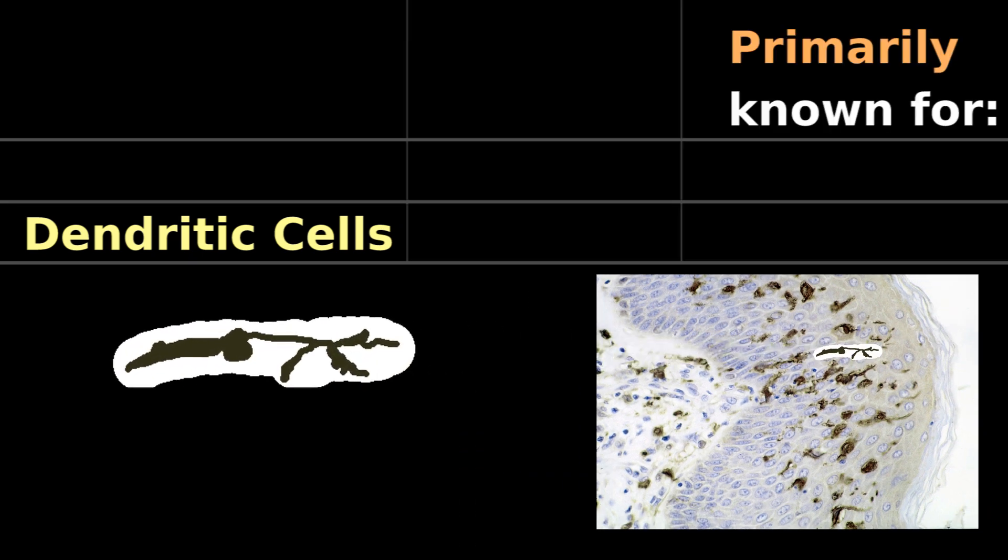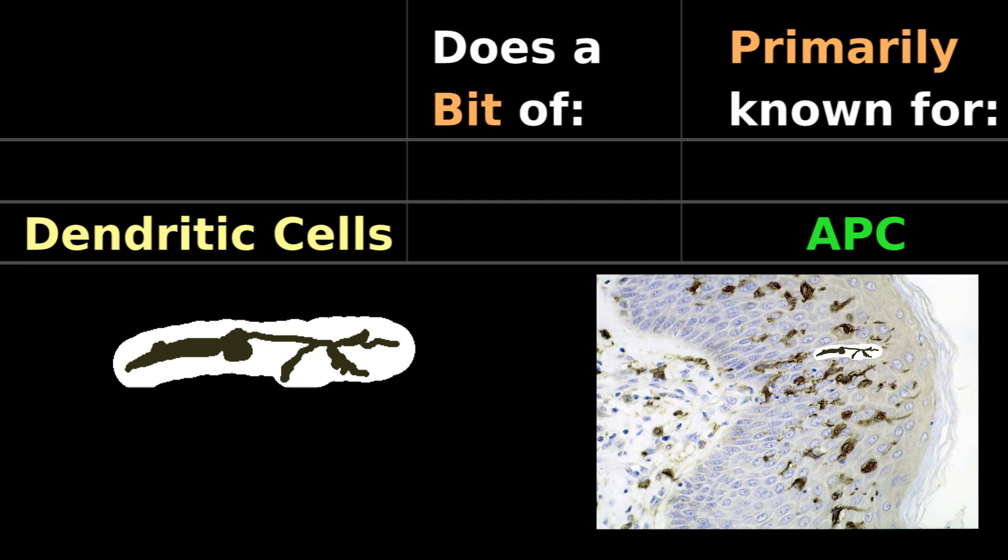While dendritic cells are known primarily for their antigen-presenting, before they present their antigen, they do a little eating first.